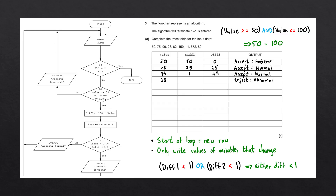We go back to the beginning of the loop and input the next value, which is 82. The value is still not equal to minus 1, so we continue and evaluate the condition. 82 is between 50 and 100, so we execute the two processes. diff1 is set to 100 minus 82, which equals 18 — we write 18 under the diff1 column, noting we skip a row. diff2 is set to 82 minus 50, which results in 32 — we write that under the diff2 column, again skipping that row. Neither diff1 nor diff2 are less than 1, so we output 'accept: normal'.